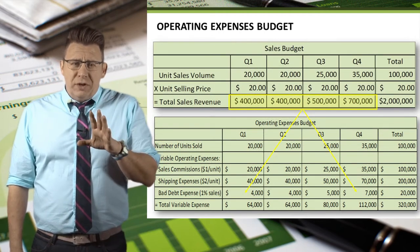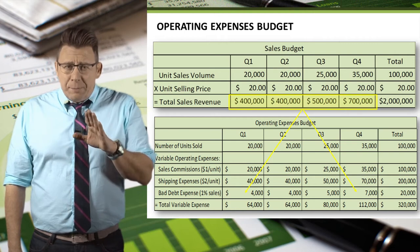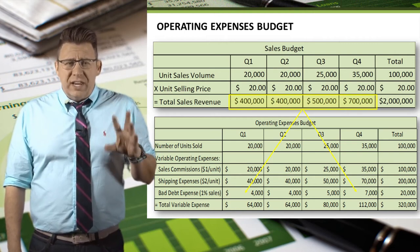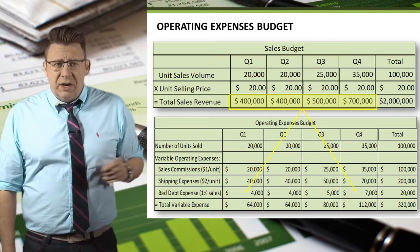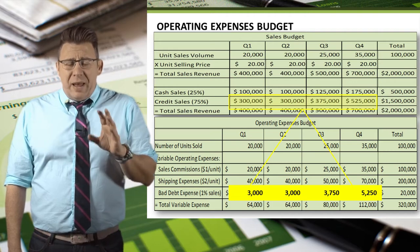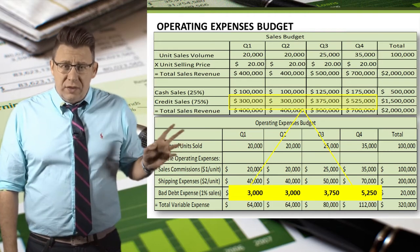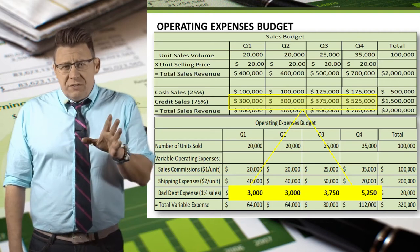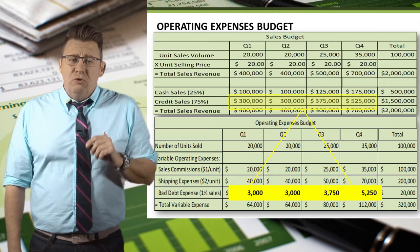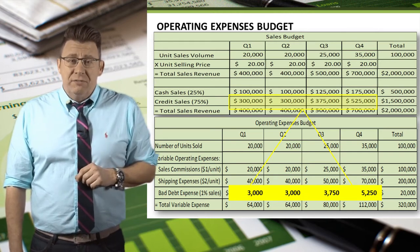Let's flash back a moment to the operating expenses budget. In my example, I assume that bad debt expense is 1% of net sales revenue. Often though, a better way of doing it is to base bad debt expense off of net credit sales, as shown in this example. In this video series I'll just keep my example the same, but be aware that you might encounter a problem that uses net credit sales instead of total sales.